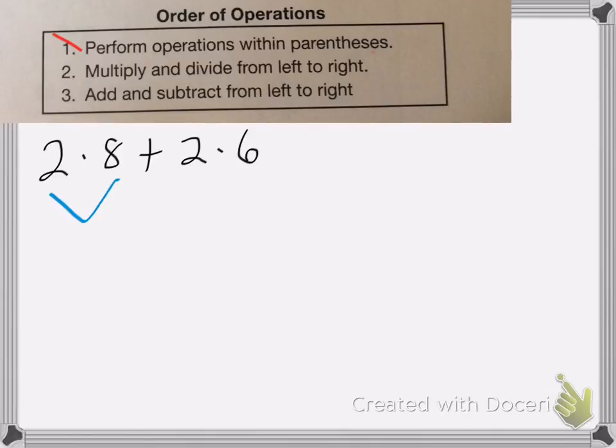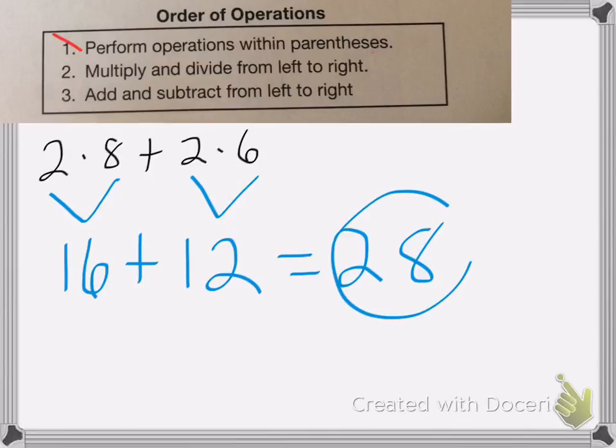So I'm going to multiply my numbers first from left to right. So 2 times 8 is 16. The plus sign comes down because I haven't used it yet. And then 2 times 6 is 12. Now I'm going to add from left to right, 16 plus 12 is equal to 28. And that's my answer.